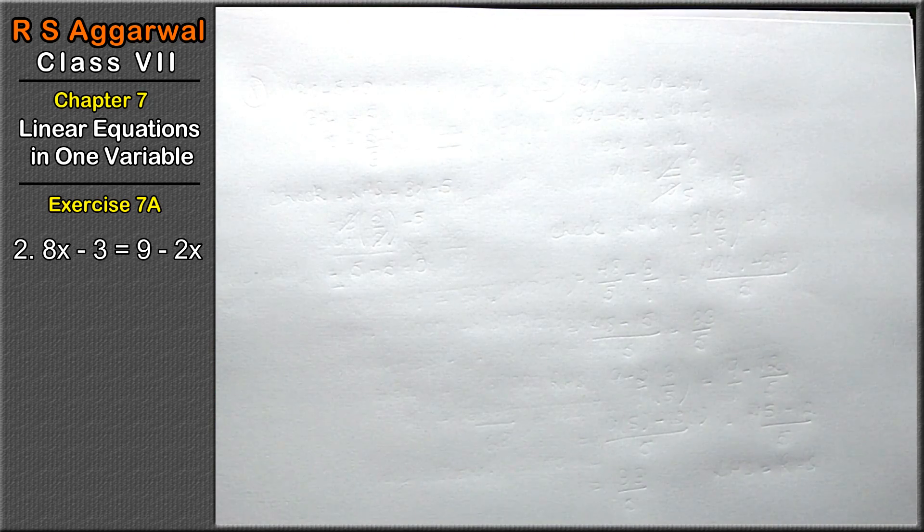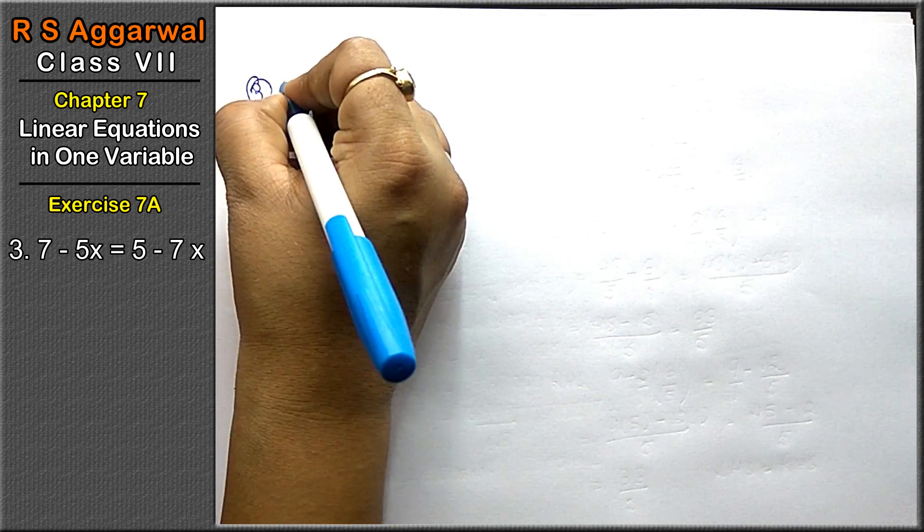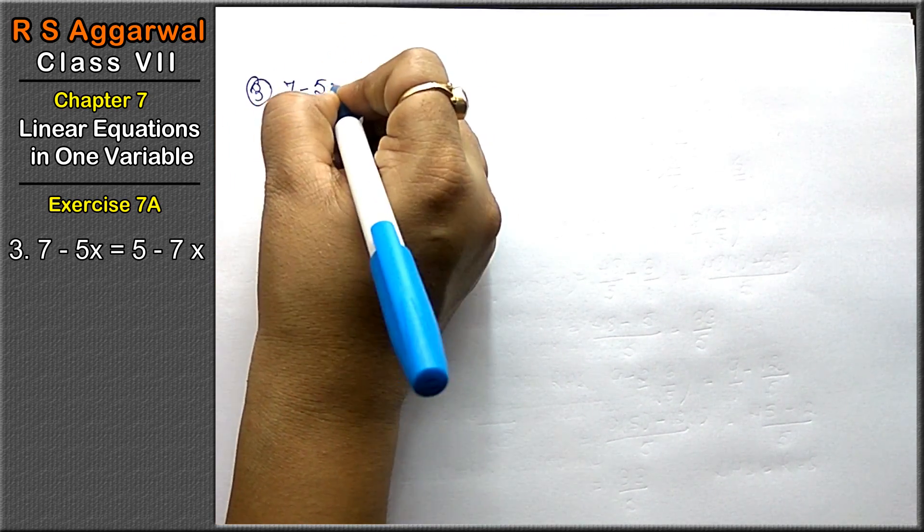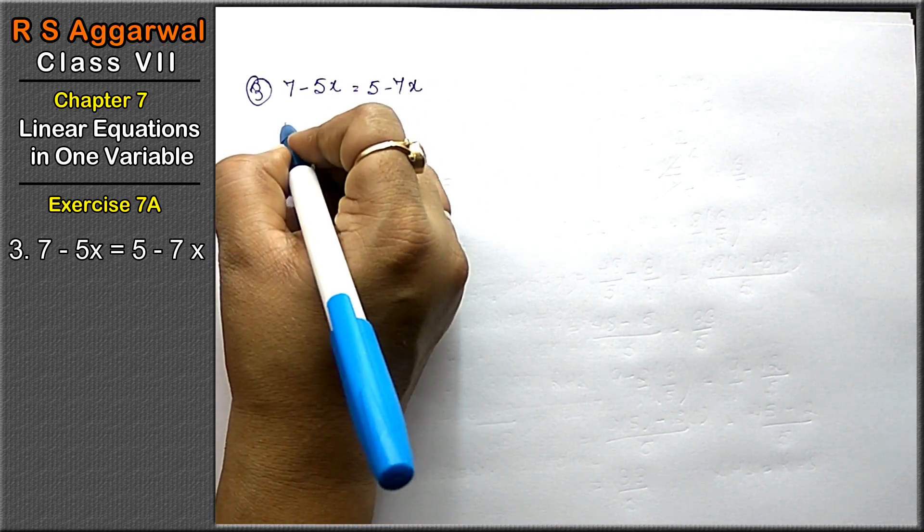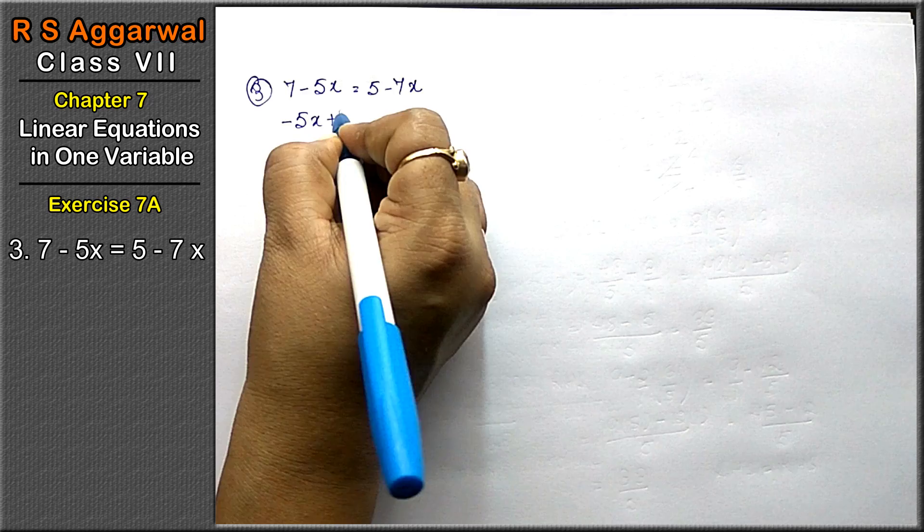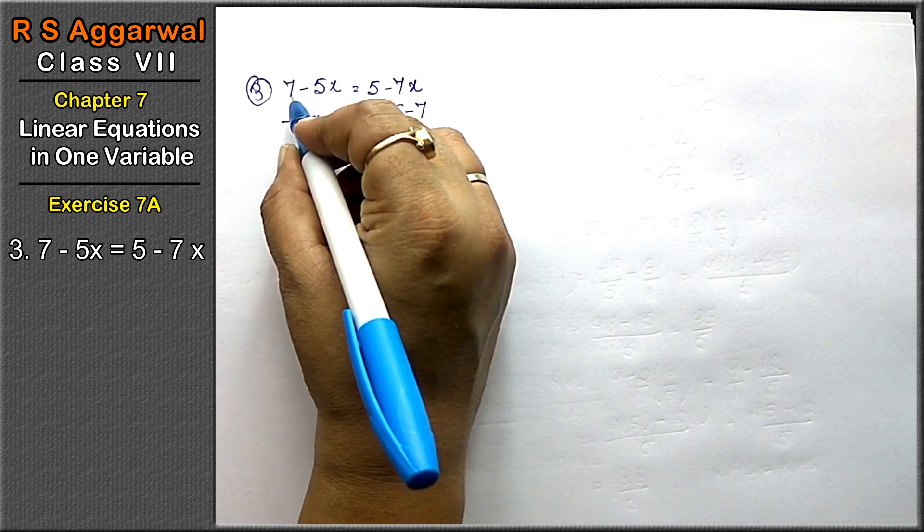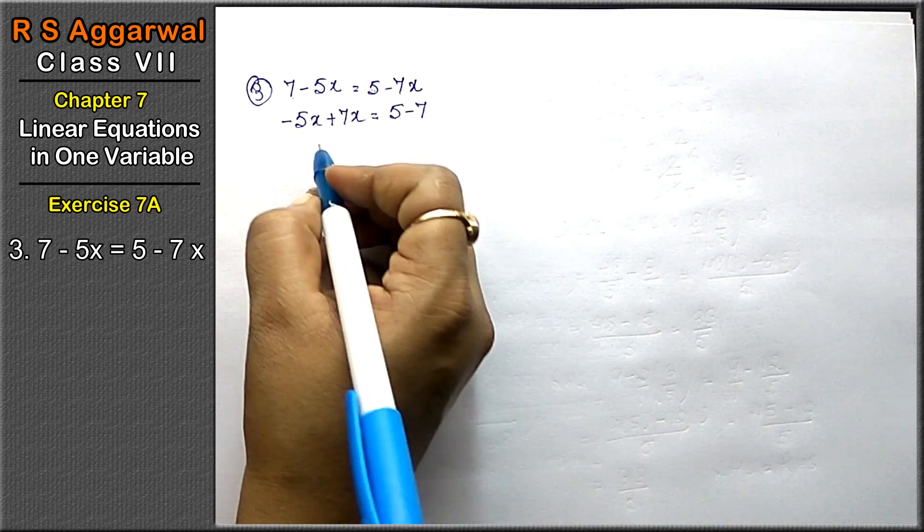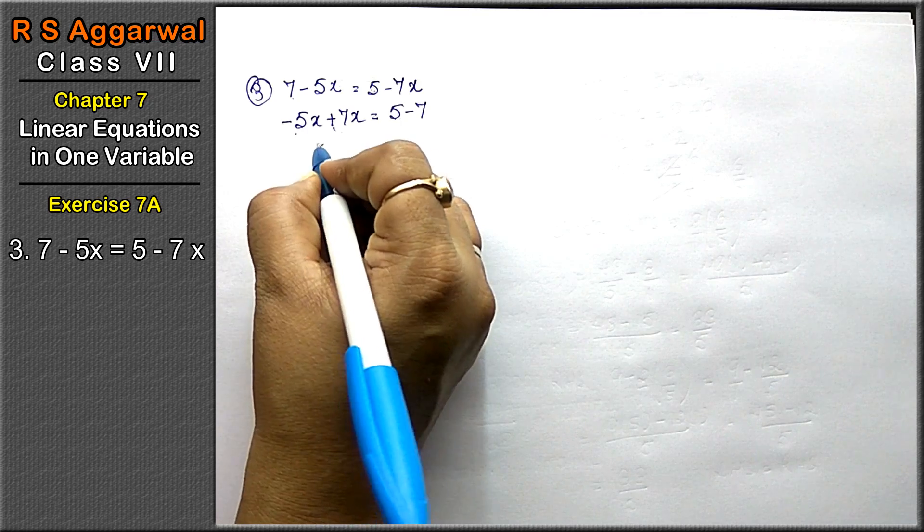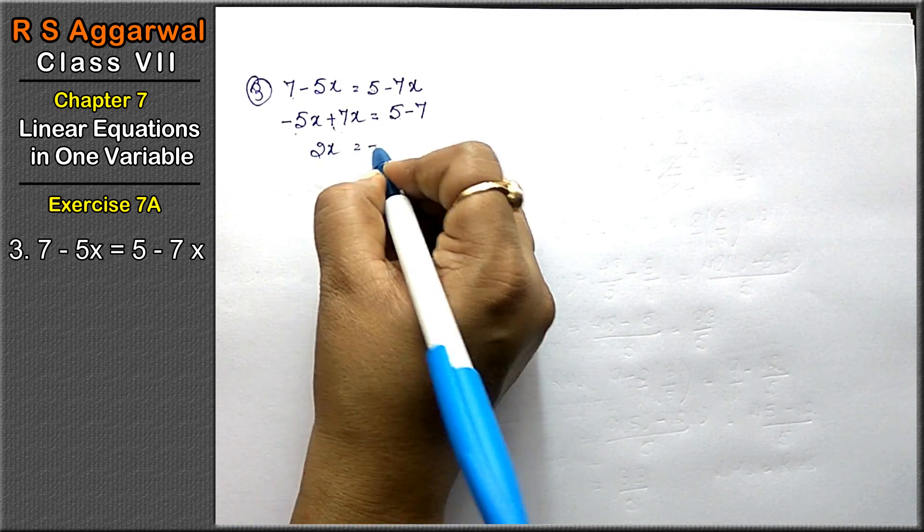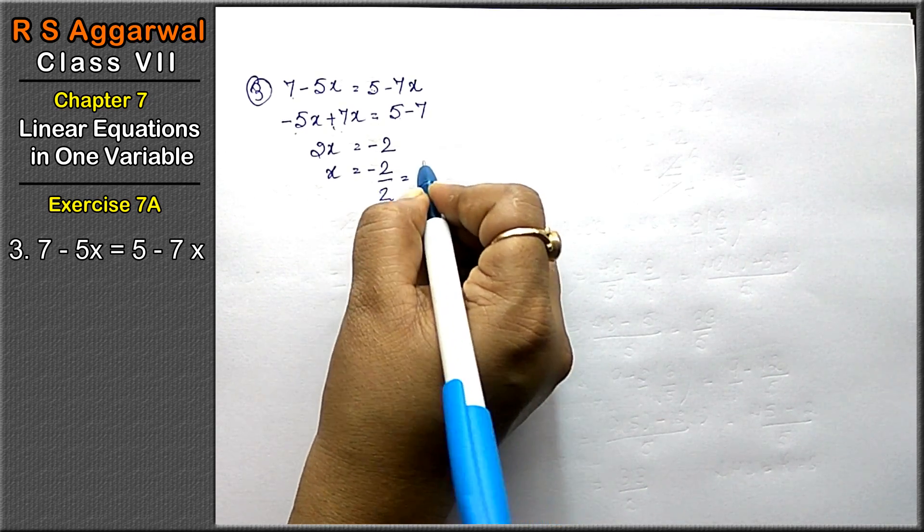Let's do next question, third part: 7 minus 5x equals to 5 minus 7x. Move x terms to one side: minus 5x plus 7x equals 5 minus 7. This gives 2x equals to minus 2. x equals to minus 2 upon 2, that is minus 1.